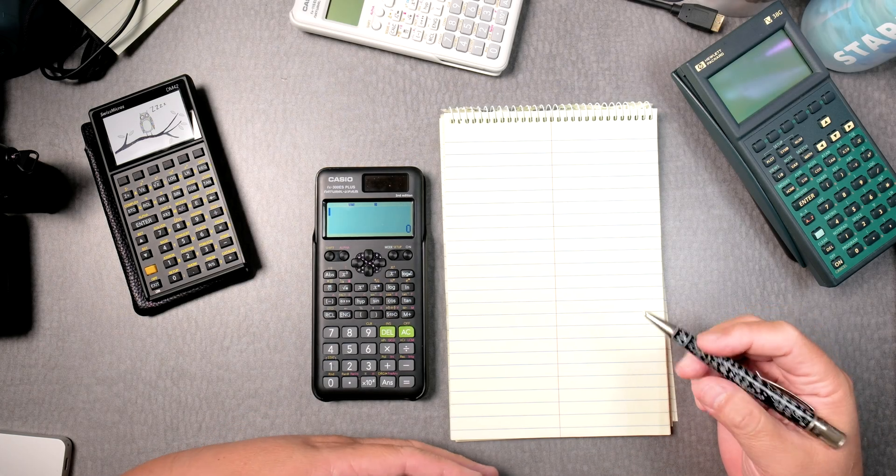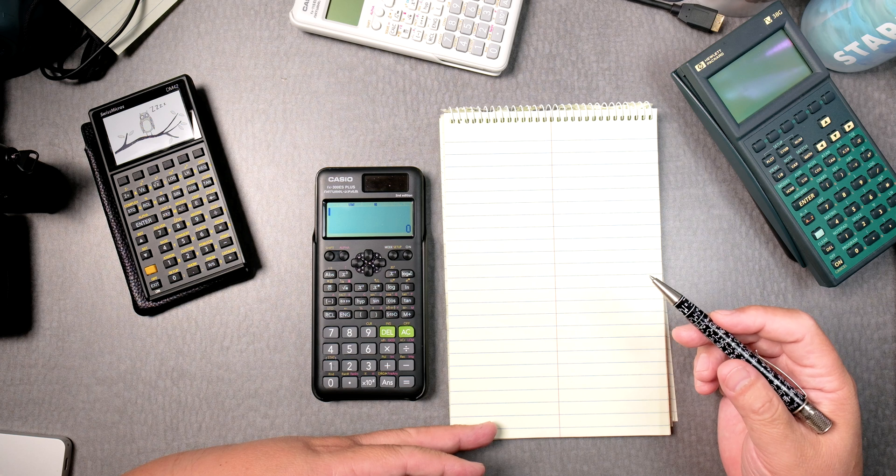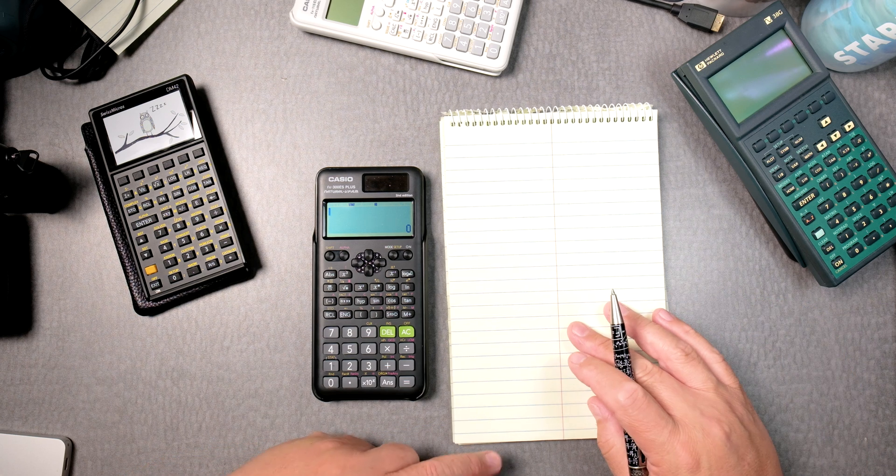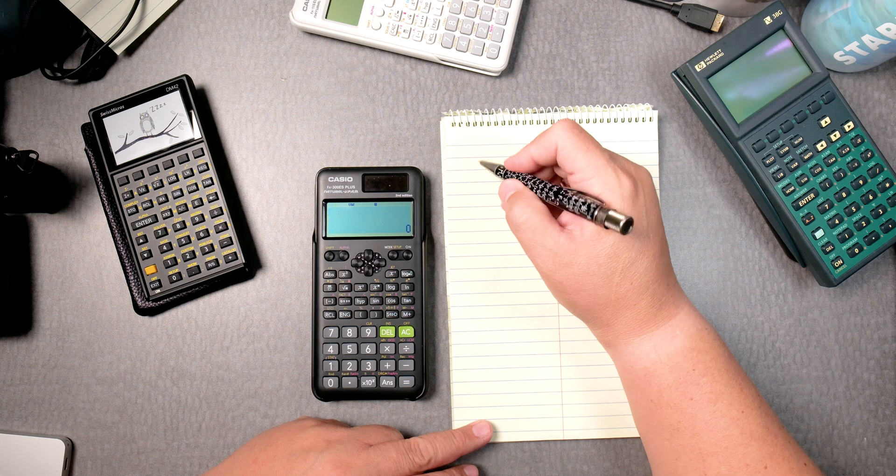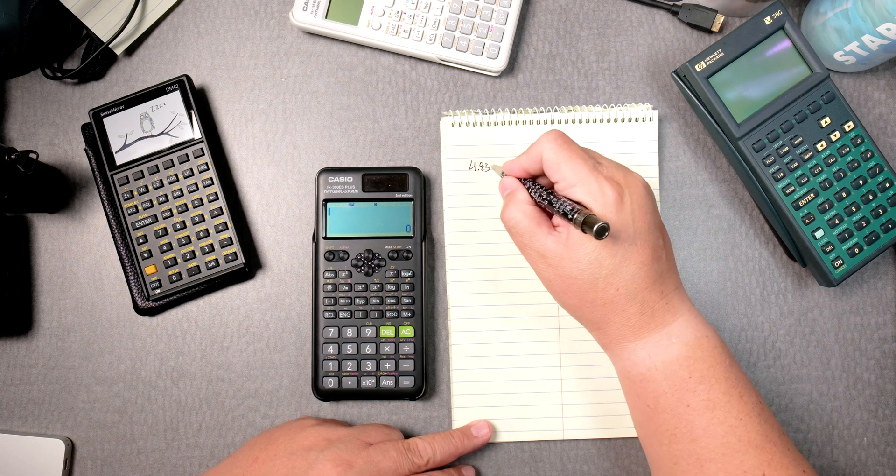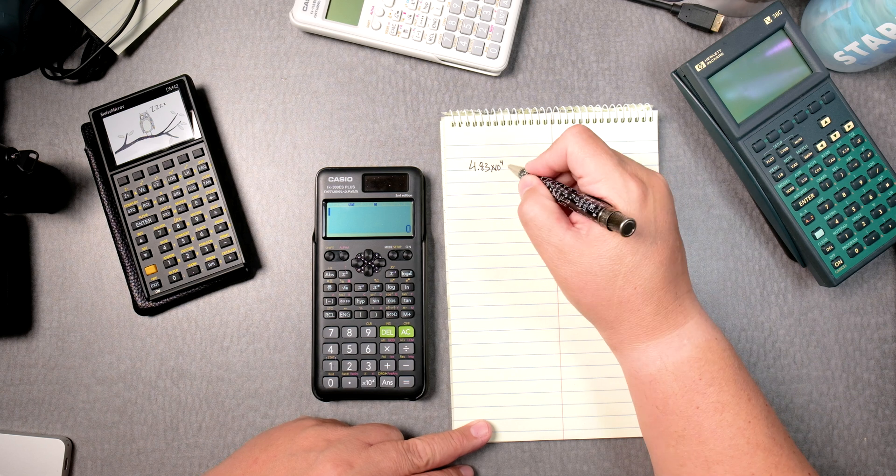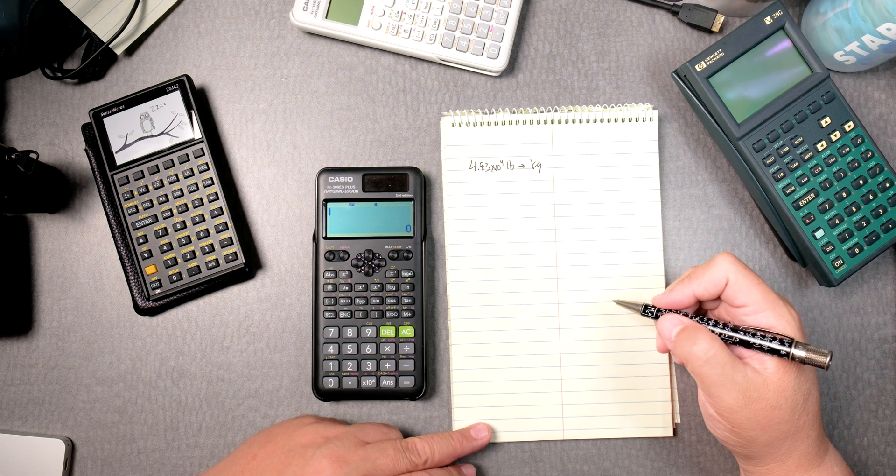In this video, we're going to do unit conversions for the Casio FX300ES+. Let's say we have something like 4.83 times 10 to the fourth pounds and we want to change it into kilograms.